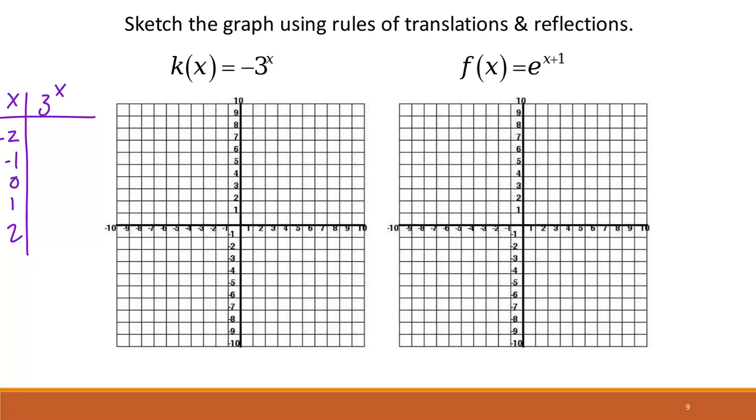And so the original function, which would be the parent function in this case, is 3 to the x. So if we think about that, we're just saying, okay, 3 to the negative 2.